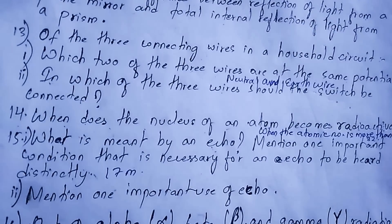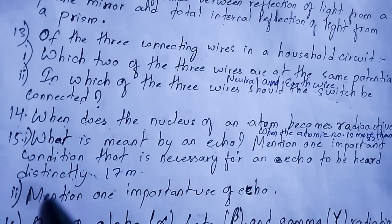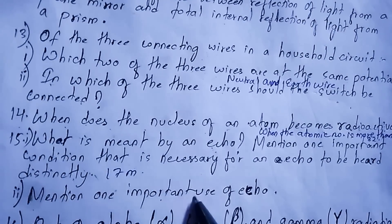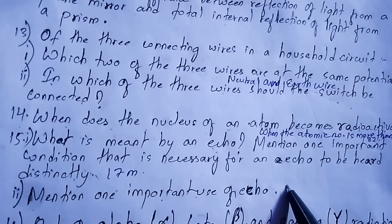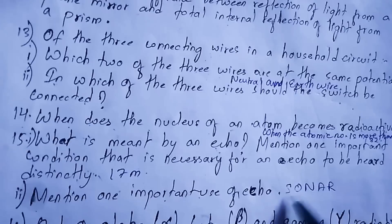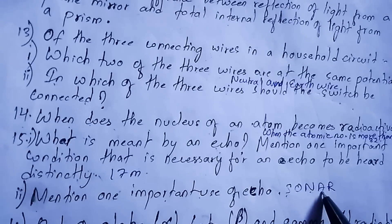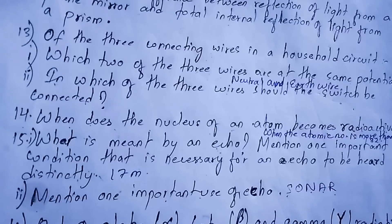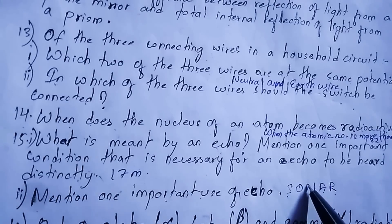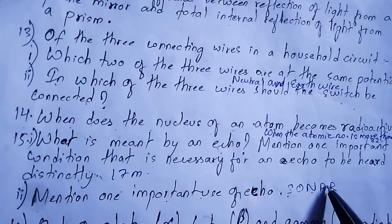Sub-part of question 15: mention one important use of echo. Echo is used in SONAR — Sound Navigation And Ranging — to find the depth of an obstacle in the sea.